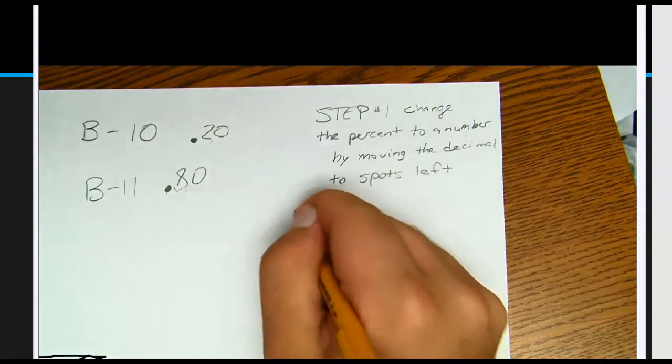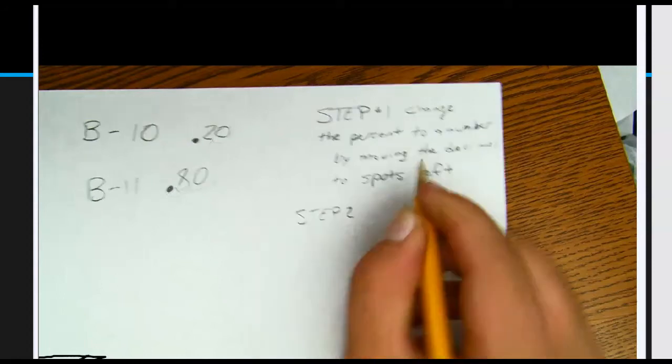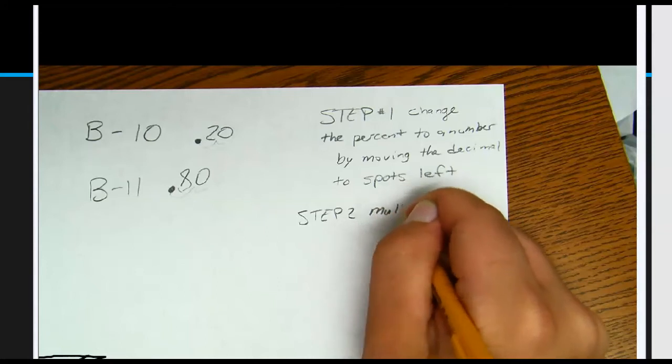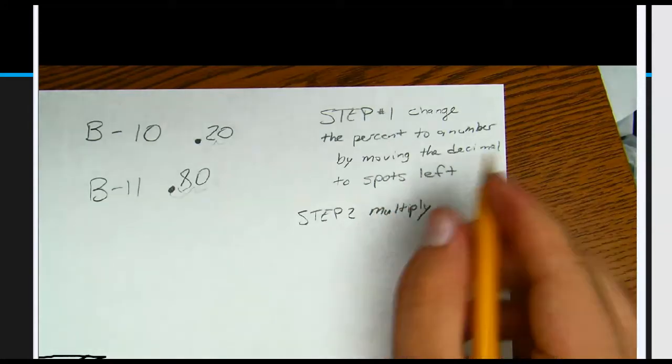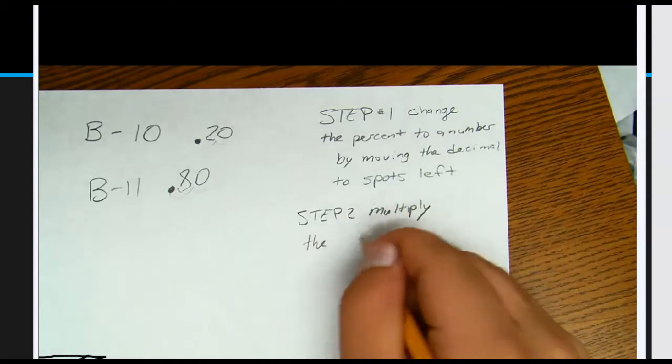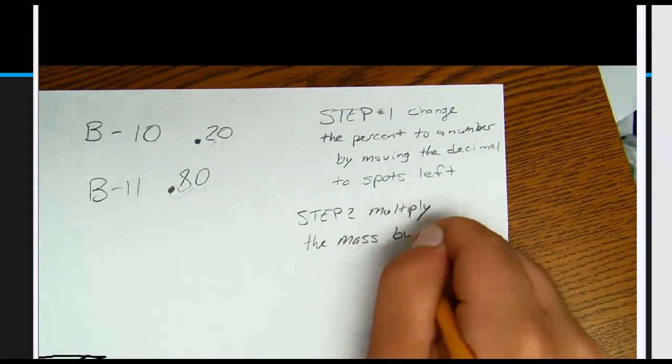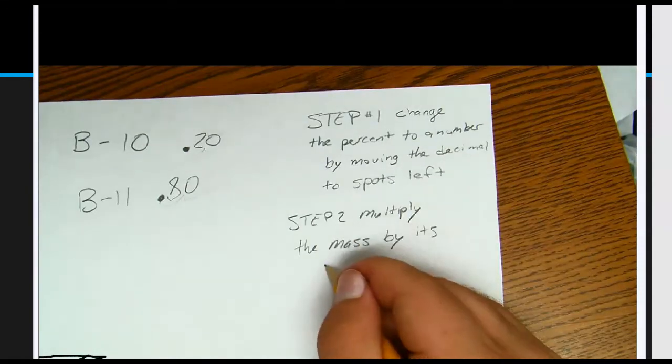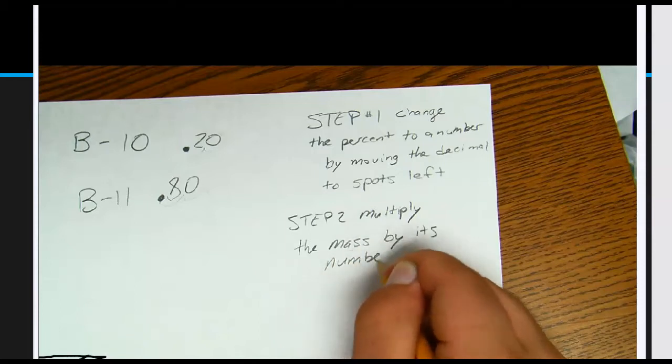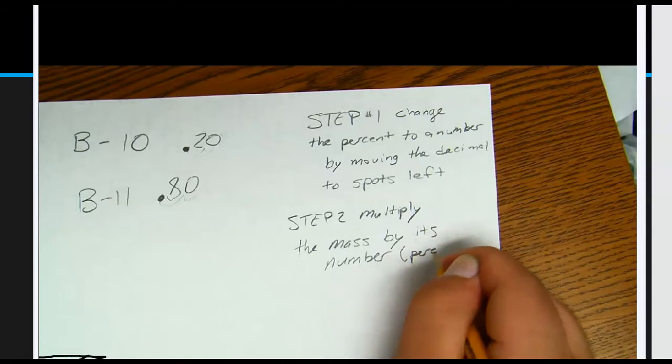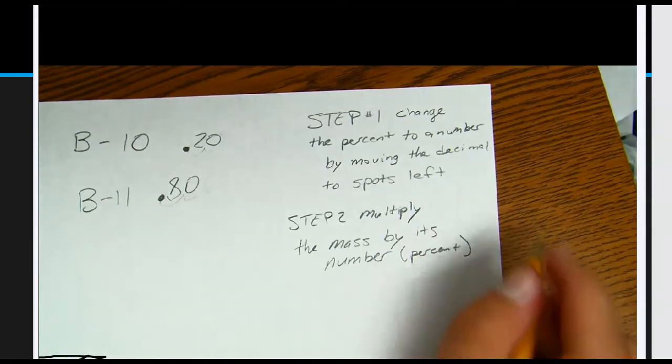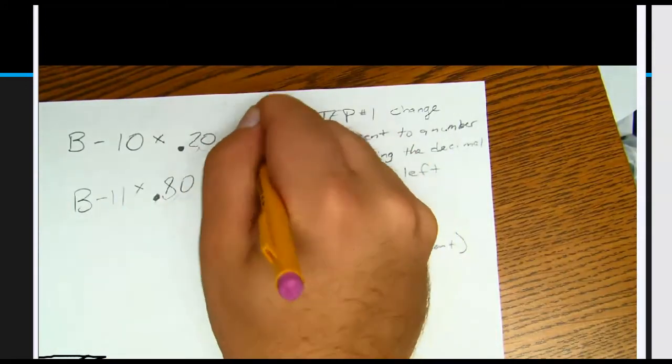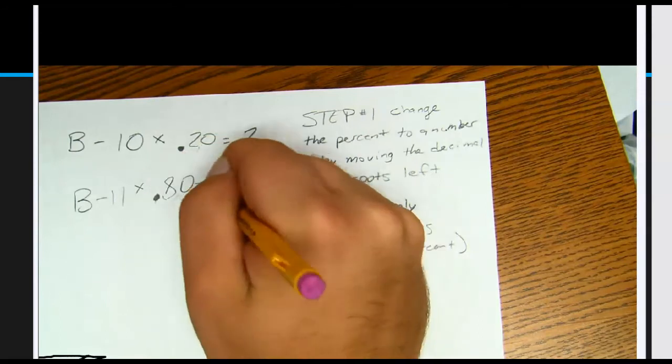Step two: multiply the mass by its number. Mass by its number. And this was the percent that you just changed the decimal to. All right, so you're going to multiply those two numbers together and those two numbers together. All right, so I get 2 and I get 8.8.